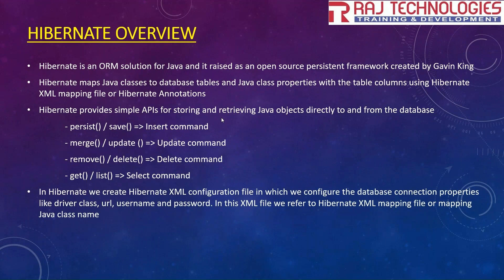In Hibernate, we create a Hibernate XML configuration file. In this configuration file, we configure the database connection properties: driver class, URL, username, and password. We also need to refer to our Hibernate XML mapping file or our POJO class name in this configuration file. When using Hibernate annotations in our POJO class, we refer to the POJO class name in the configuration file.